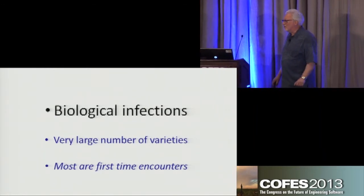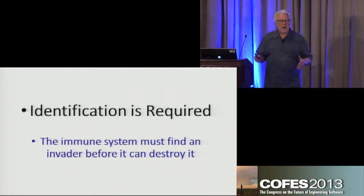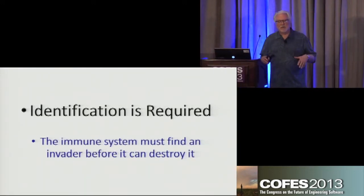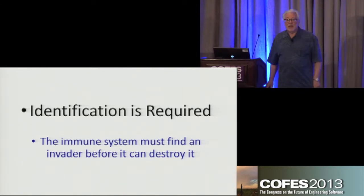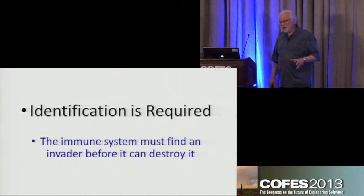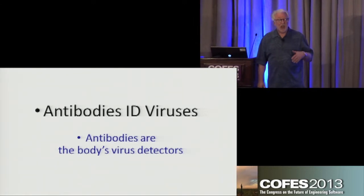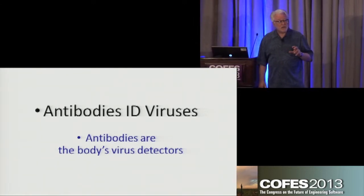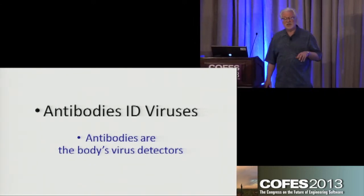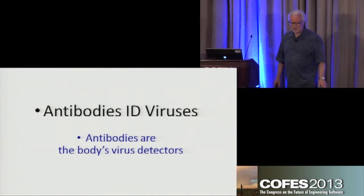Identification is what's required. We need to find a way to identify an invader before we can call in the army and vanquish the enemy. Antibodies are what actually do this identification process. We're going to look at how the immune system does this so that we can perhaps learn something that can be applied elsewhere.